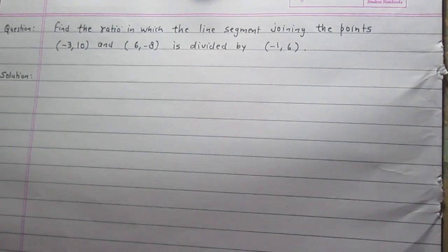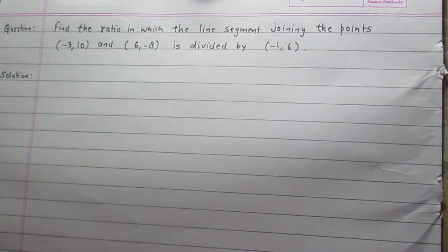Find the ratio in which the line segment joining the points (-3, 10) and (6, -8) is divided by the point (-1, 6).